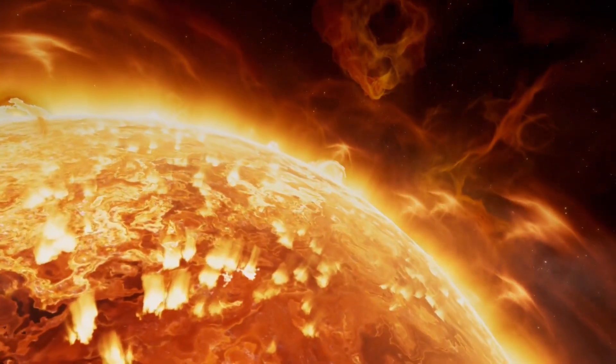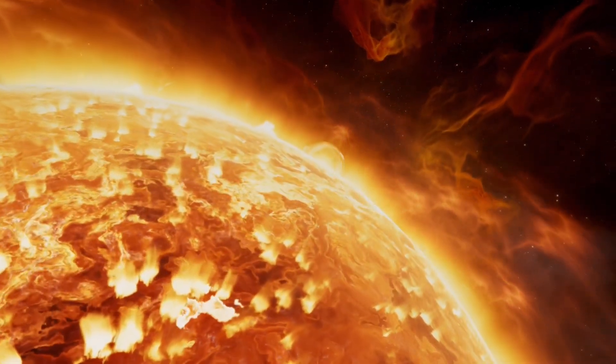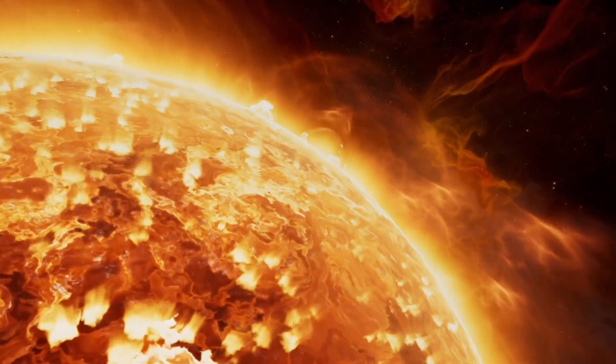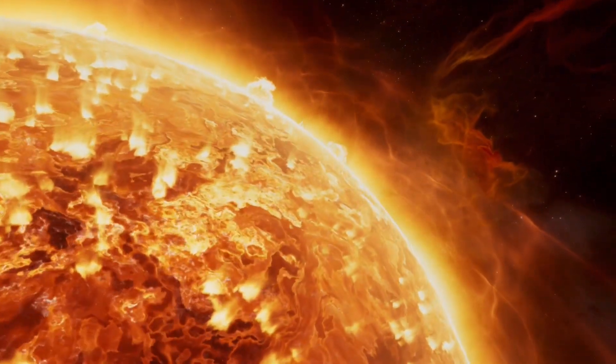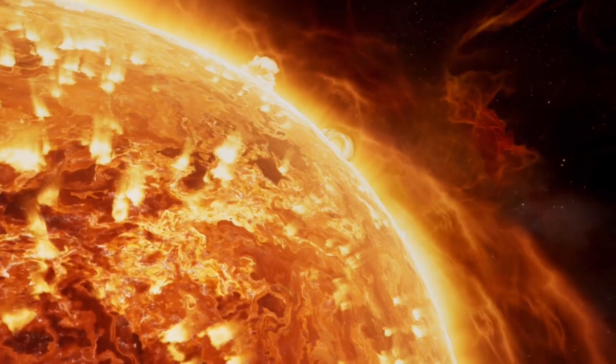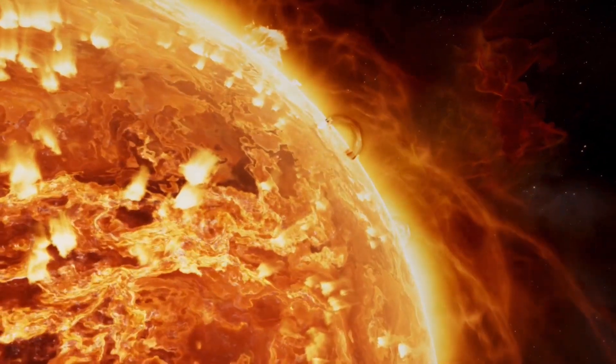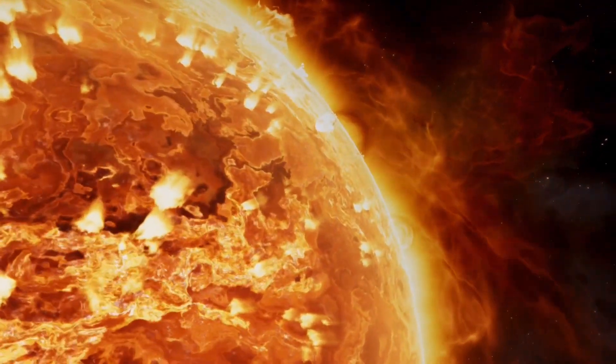At the centre of the solar system is the sun. It's a huge ball of hot glowing gas that gives us light and heat. The sun is so big you could fit more than a million earths inside it.